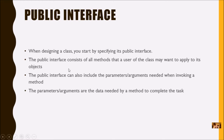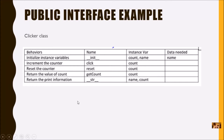The public interface consists of all methods that a user of the class may want to apply to its objects. It can also include parameters or arguments needed when invoking a method — these are the data needed by a method to complete a task. Here's an example of the public interface for the clicker class: the behaviors, the names of methods, some instance variables that might be used, and any data needed from the function.